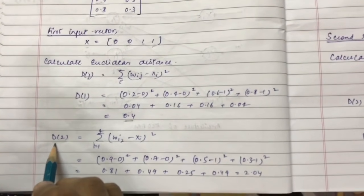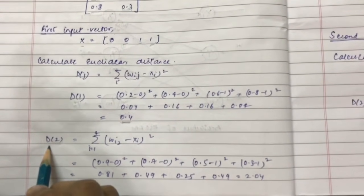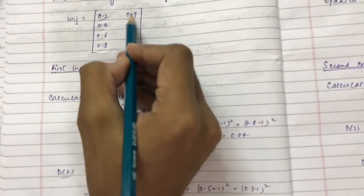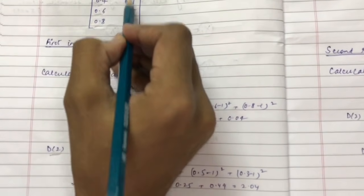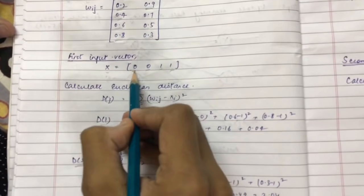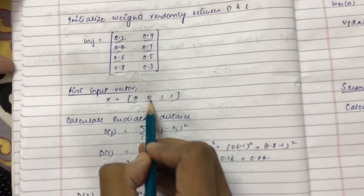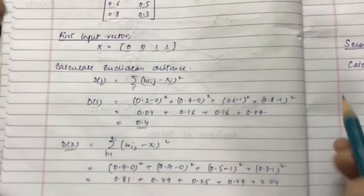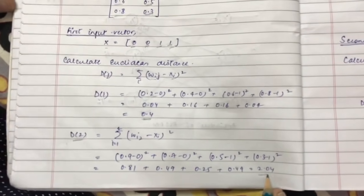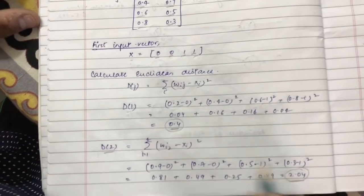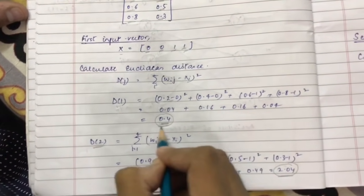Similarly, we calculate the squared Euclidean distance between input vector x1 and cluster y2: (0.9 - 0)² + (0.7 - 0)² + (0.5 - 1)² + (0.3 - 1)² = 2.04. Since d1 = 0.4 and d2 = 2.04, whichever is less is the winning cluster, so y1 is the winning cluster.